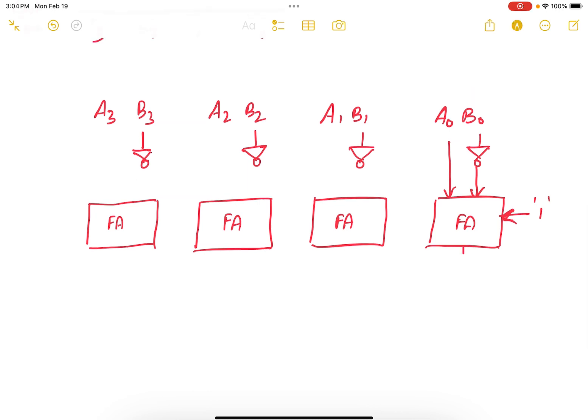The output of the full adder is S0 and C1. C1 is the third input for the next full adder. So you have A1, B1, and the third input for the full adder. So this full adder gets A2 and B2 prime and C2.